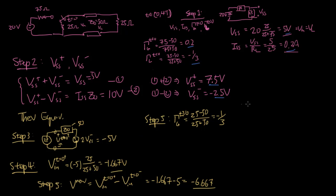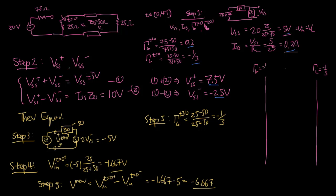I'm going to draw the bounce diagram. When we do the other approach you should get the same result, so this illustration should work for both cases. We have minus a third on this side and minus a third on this side, and the new wave coming out is going to be minus 6.667.